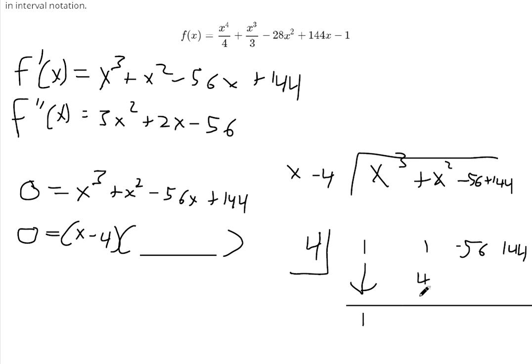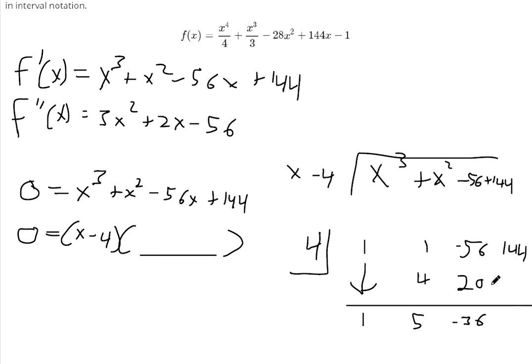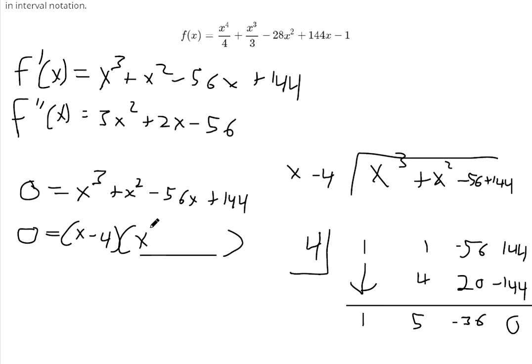And so we carry down the 1 to start off synthetic division. 4 times 1 makes 4, 4 plus 1 makes 5. 4 times 5 makes 20, negative 56 plus 20 makes negative 36. 4 times 36 makes 144, so that cancels out. So what we have left over here is we start with something cubic divided by a linear, so the power should decrease by 1. This is x² + 5x - 36.